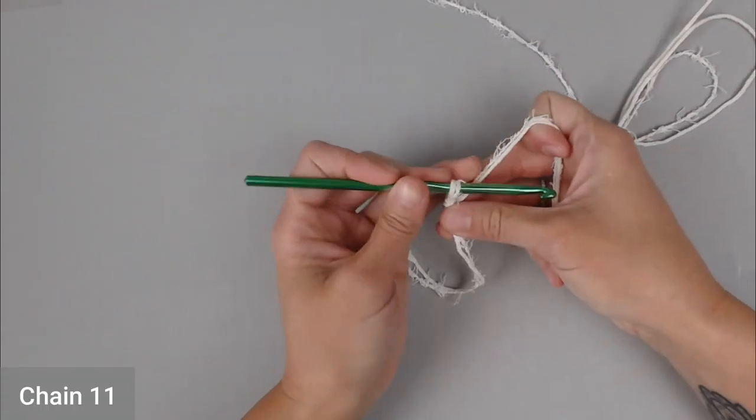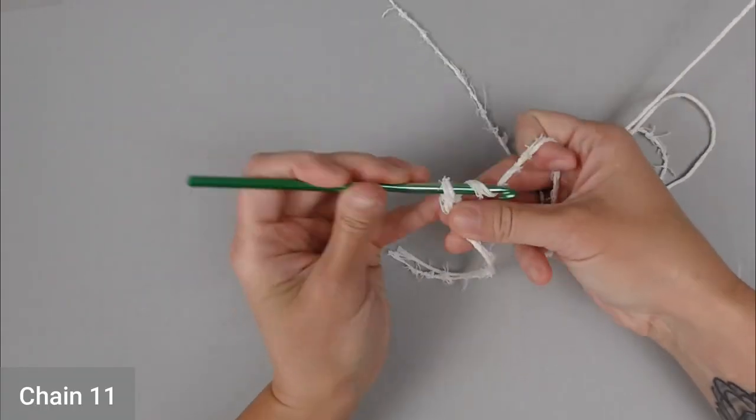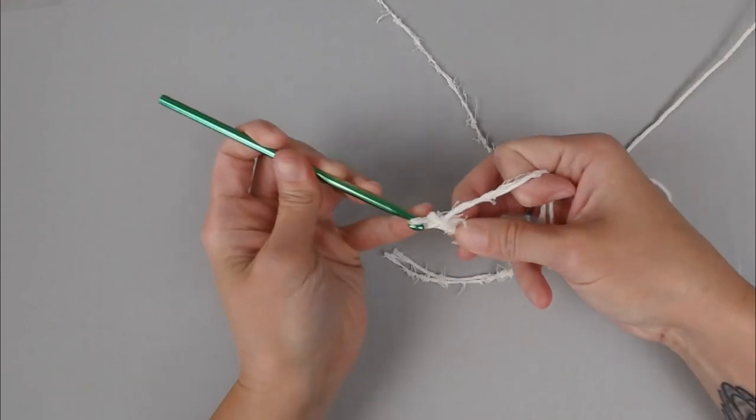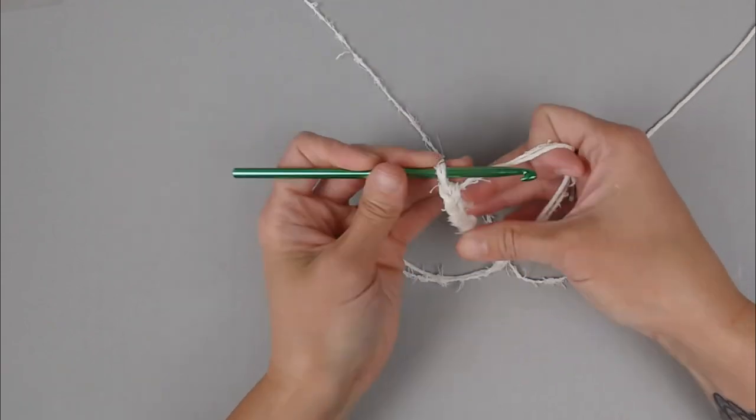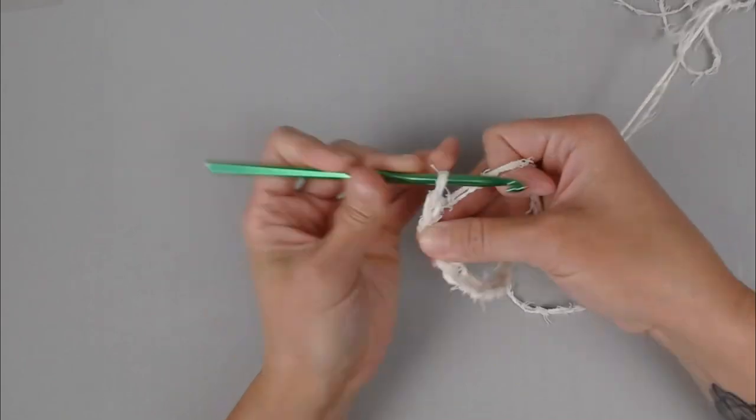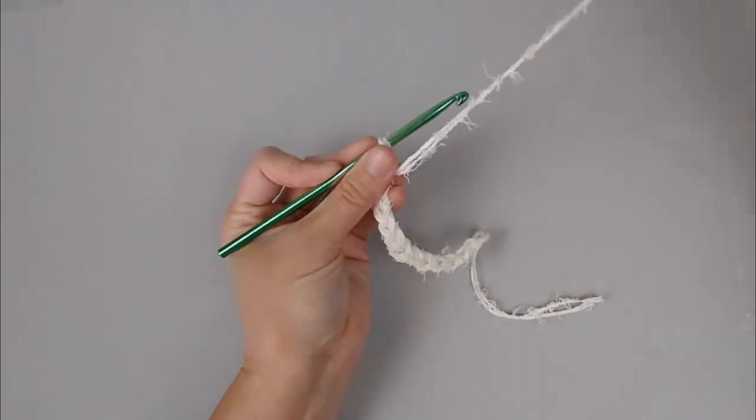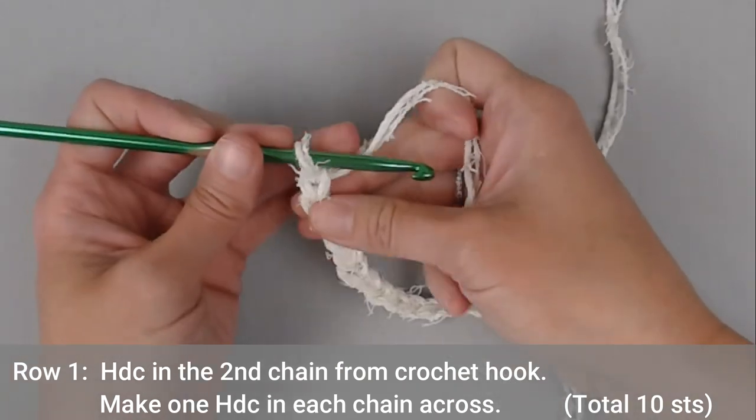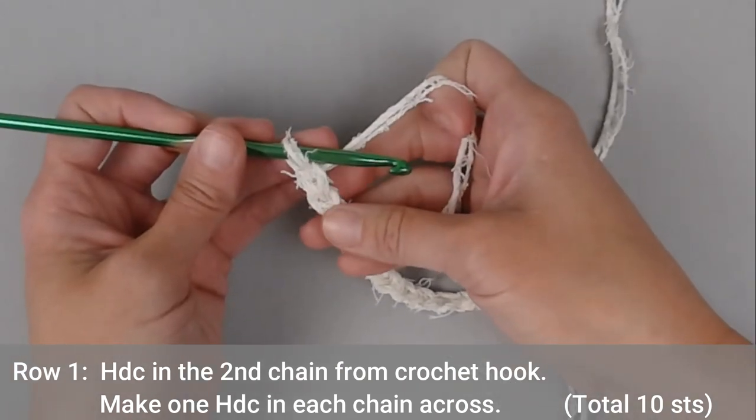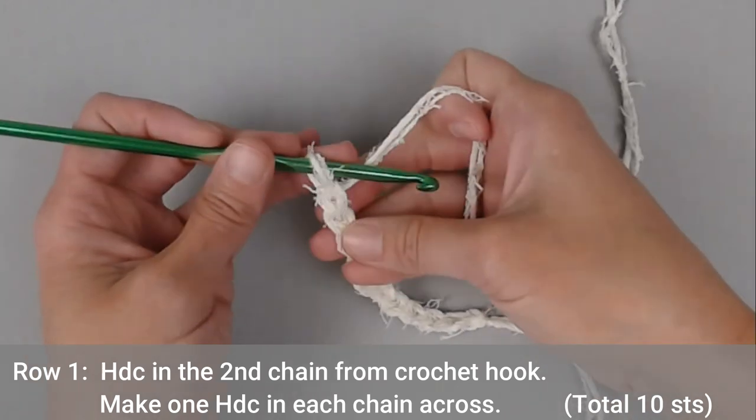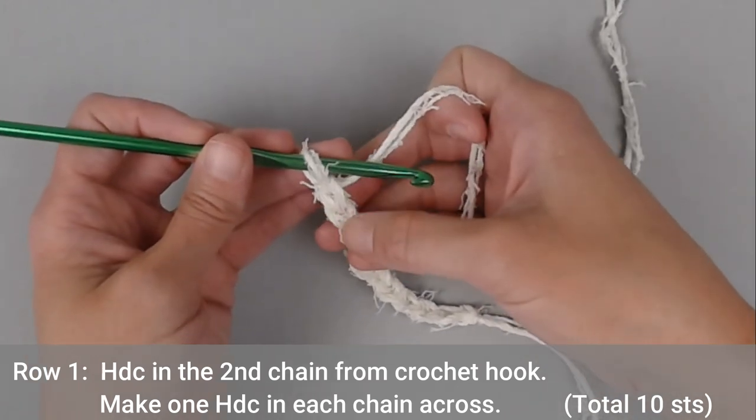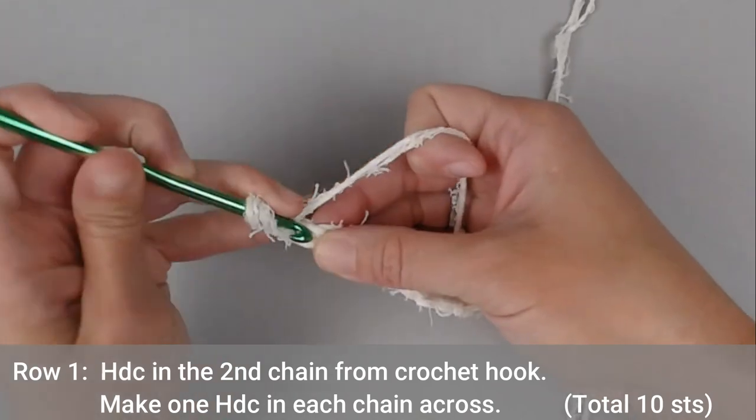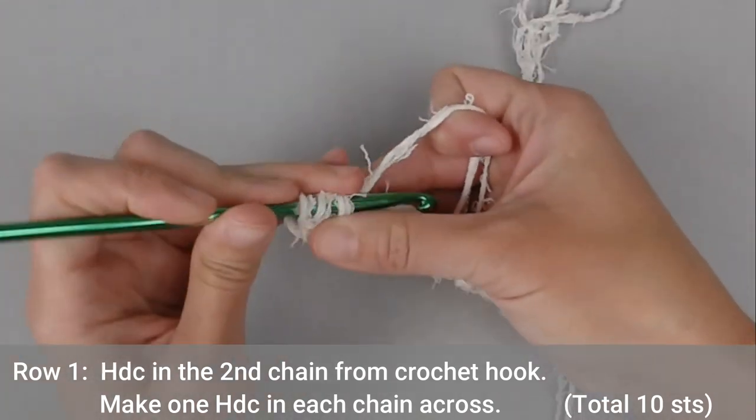Start with a long enough tail for you to weave in your ends at the end of the project. Create your slipknot, attach your crochet hook, and we are ready to begin. Start by chaining 11 chains. For row 1 of our spa back scrub, we will make our first half double crochet in the second chain from our crochet hook. Looking at our V stitches, 1, 2, half double crochet in that second chain.